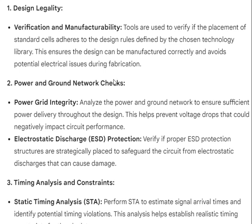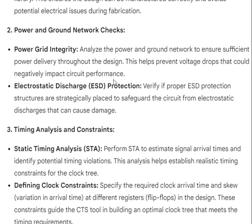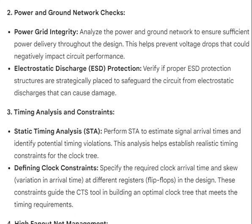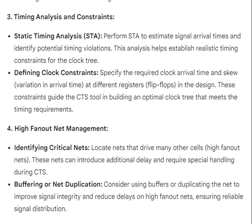Second, power and ground network checks: analyze the power grid integrity to ensure sufficient power delivery throughout the design, preventing voltage drops that could negatively impact circuit performance. Also verify that proper ESD (electrostatic discharge) protection structures are strategically placed to safeguard the circuit from electrostatic discharges.